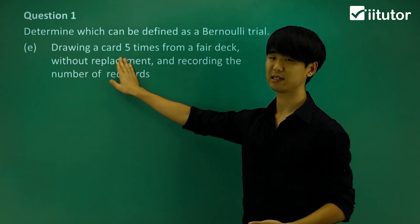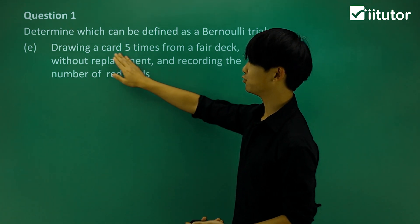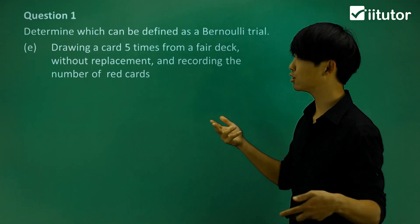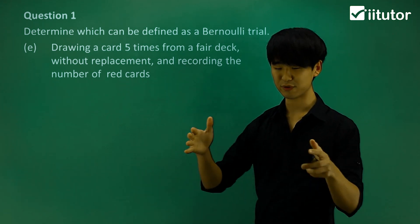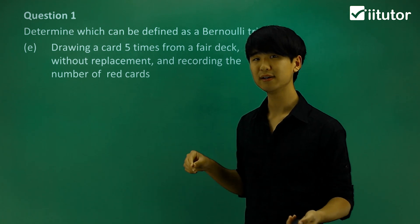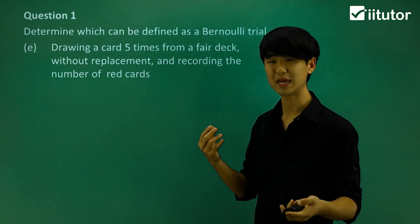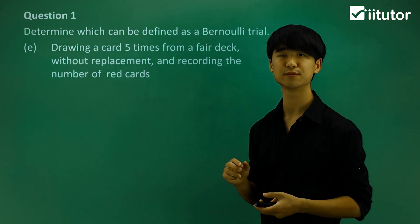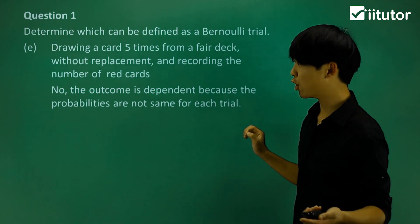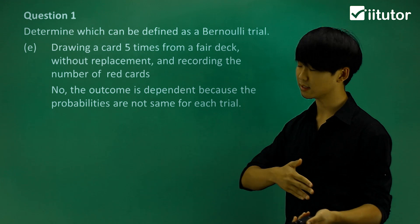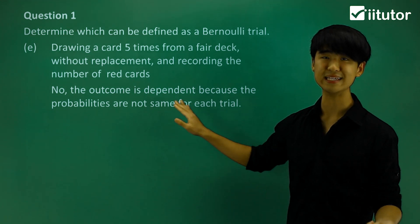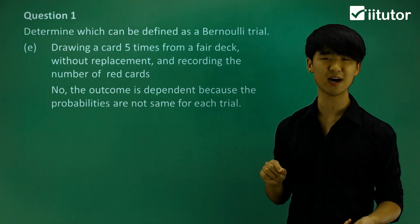Now looking at cards from a deck — from a deck of 52 cards, the event is drawing a card five times without replacement and recording the number of red cards. Note that it doesn't say drawing five cards at once; it says drawing one card at a time, looking at it, and not putting it back, doing that five times. Is this a Bernoulli trial? No, because the outcome is dependent between trials. Without replacement means the probability of the next draw is going to change, so the probabilities are not the same for each trial — every time I pick a card, my probability changes.